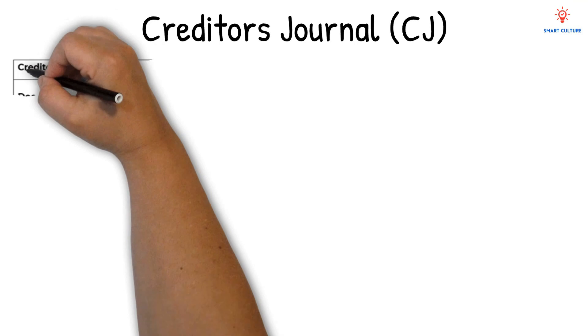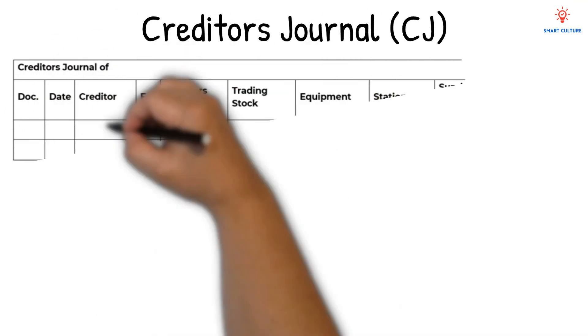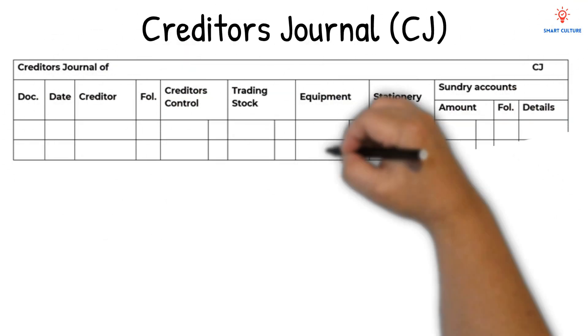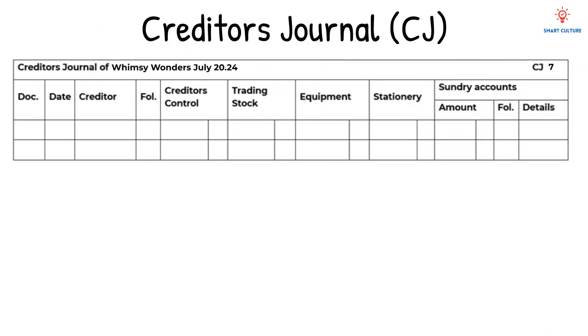In the Creditor's Journal, we include columns like Trading Stock, Stationery, and Sundry Accounts. We choose the correct column depending on what was purchased.